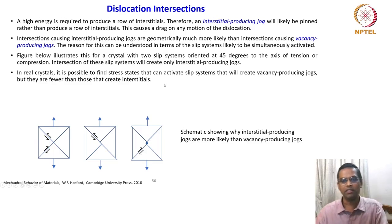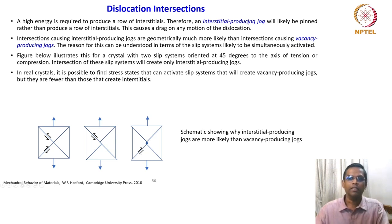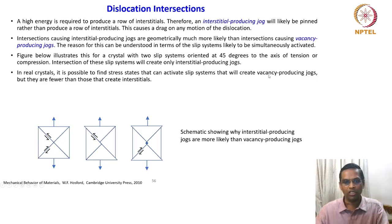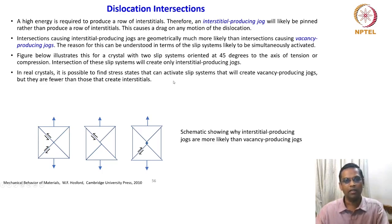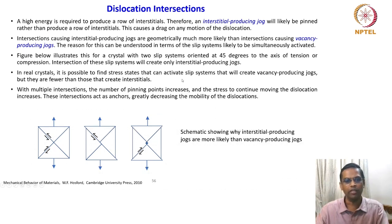What this means is that in real systems, interstitial-producing jogs will be the most prominent case compared to vacancy-producing jogs because of energy considerations. Practically, most real systems will have some impurities — interstitial atoms and so on — and that is another reason why interstitial-producing jogs are preferred.